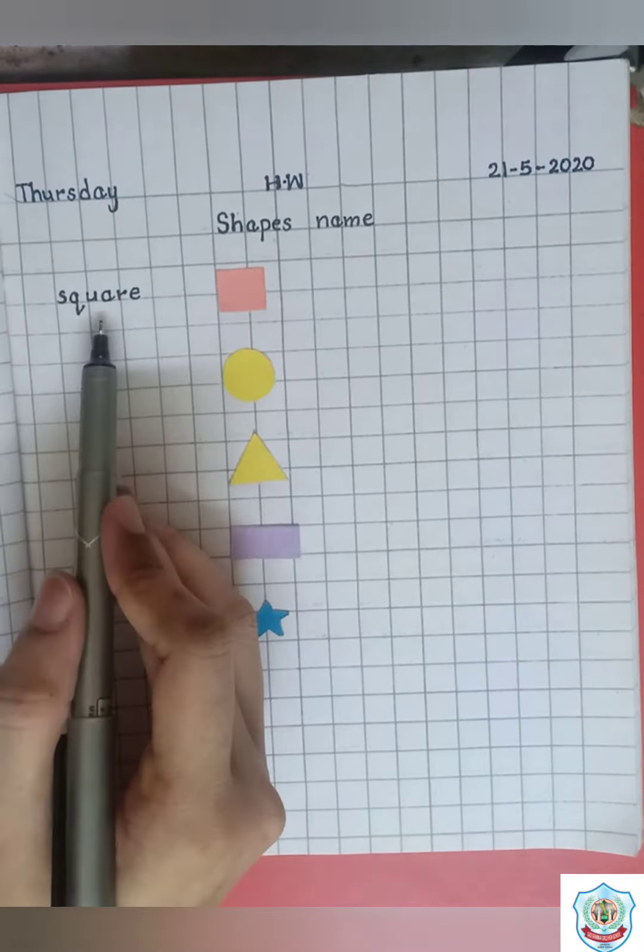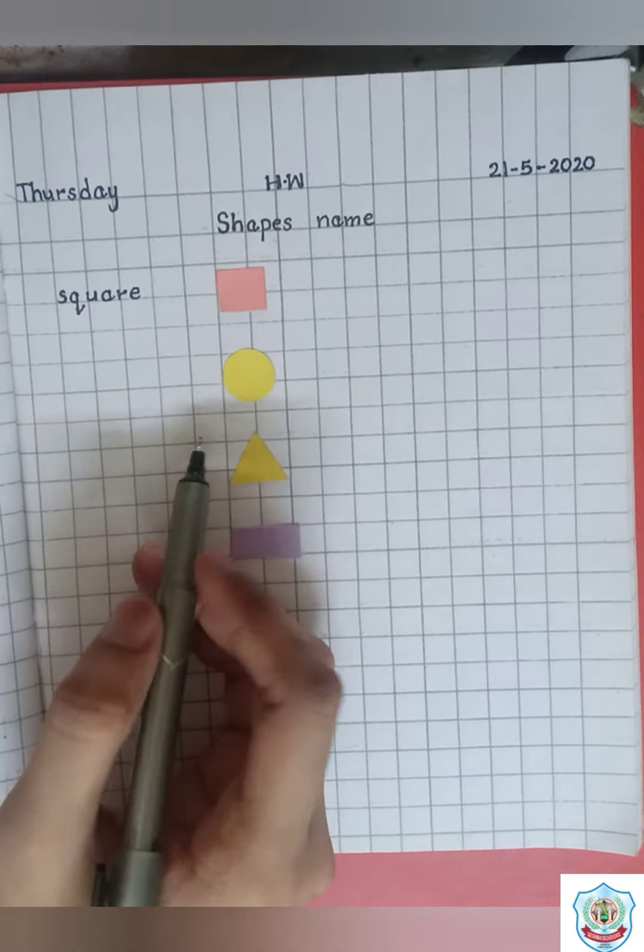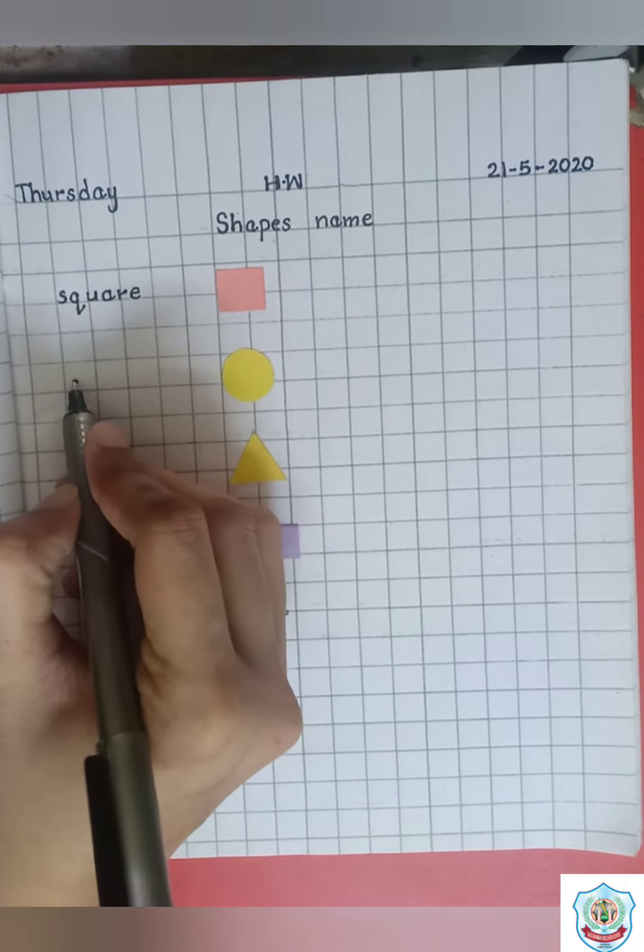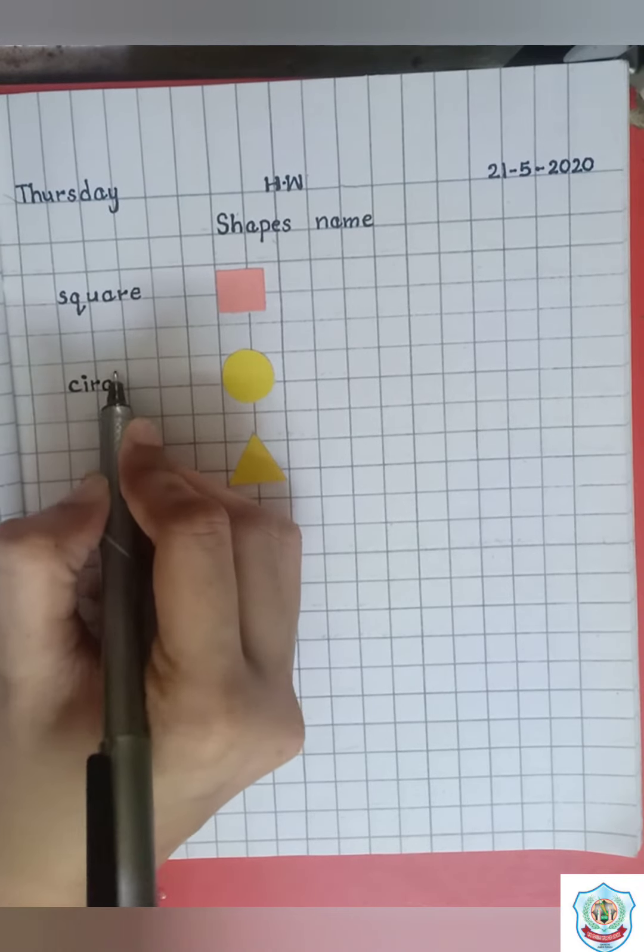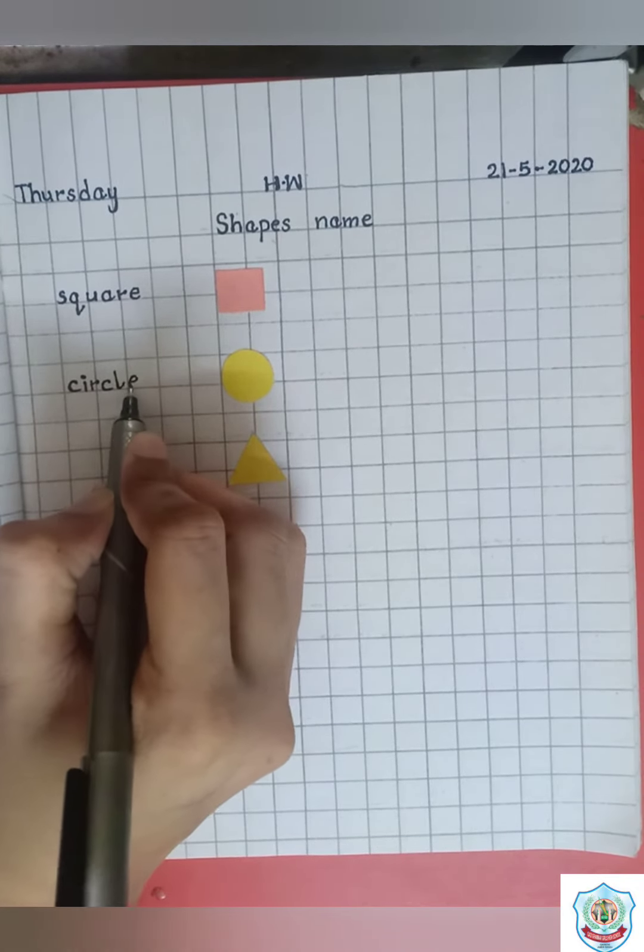The next one is circle. Write here spell of circle. C-I-R-C-L-E. Circle.